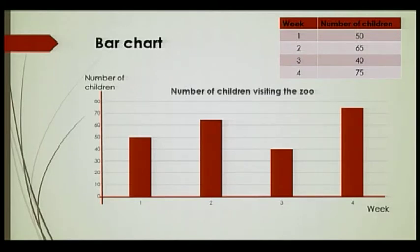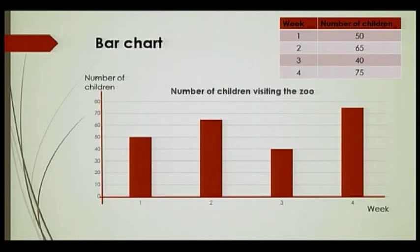For week one, I have 50 children, so I am going to draw a rectangle up to 50. This is for week one. Week two, we have 65, so this should be the same width as week one. Week three, we have 40 children visiting the zoo. And week four, we have 75 children visiting the zoo.